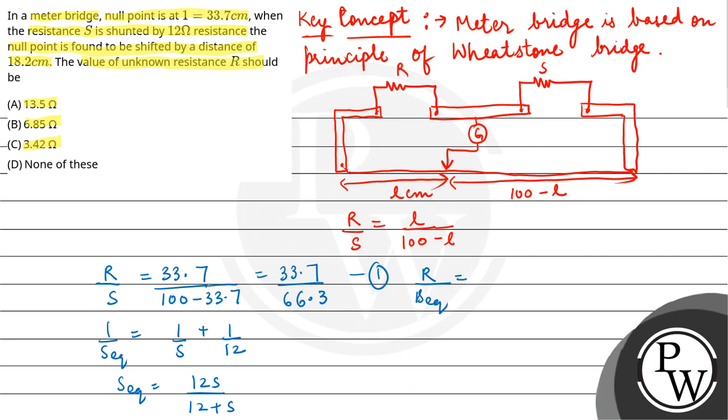So second equation, R upon S equivalent equals, now the null point is shifted by 18.2, so that will be 33.7 plus 18.2 upon 100 minus 33.7 plus 18.2.